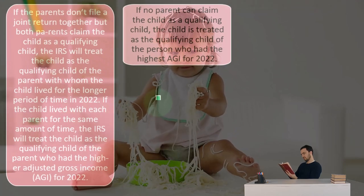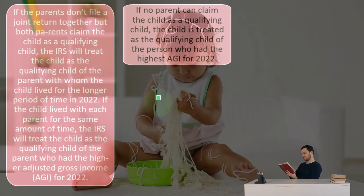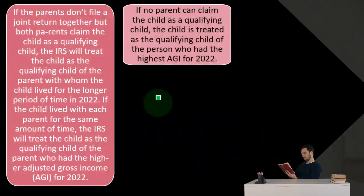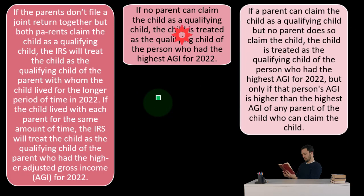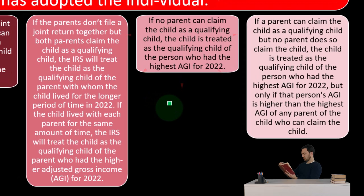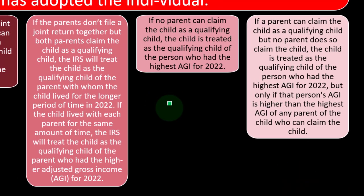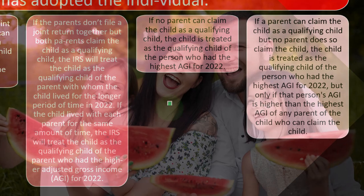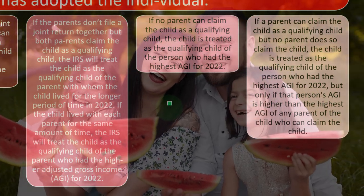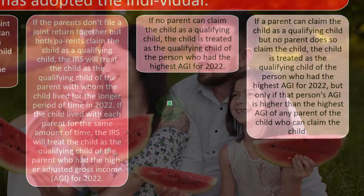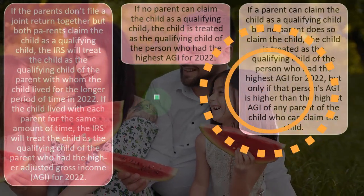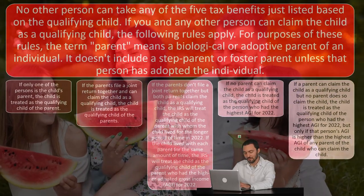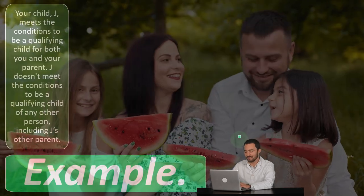If no parent can claim the child as a qualifying child, the child is treated as the qualifying child of the person who had the highest AGI for 2022. If a parent can claim the child as a qualifying child but no parent does, the child is treated as the qualifying child of the person who had the highest AGI for 2022, but only if that person's AGI is higher than the highest AGI of any parent of the child who can claim the child.